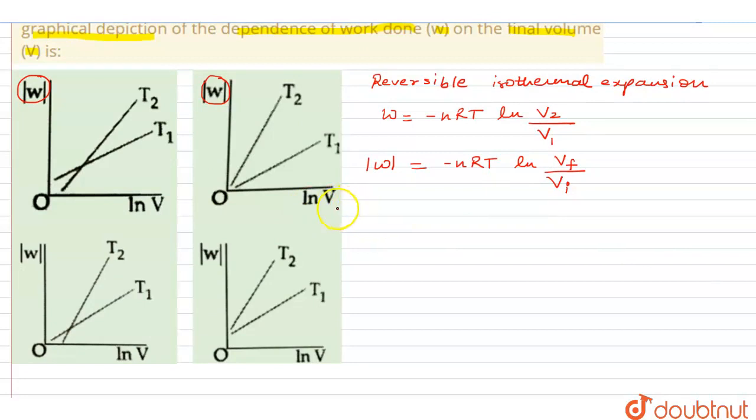So let us expand this expression. So it's going to be W is equal to minus nRT ln Vf minus ln Vi.